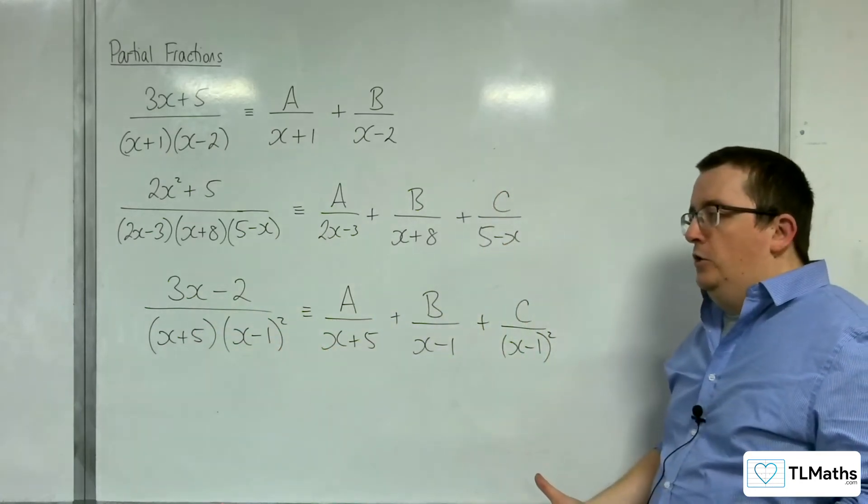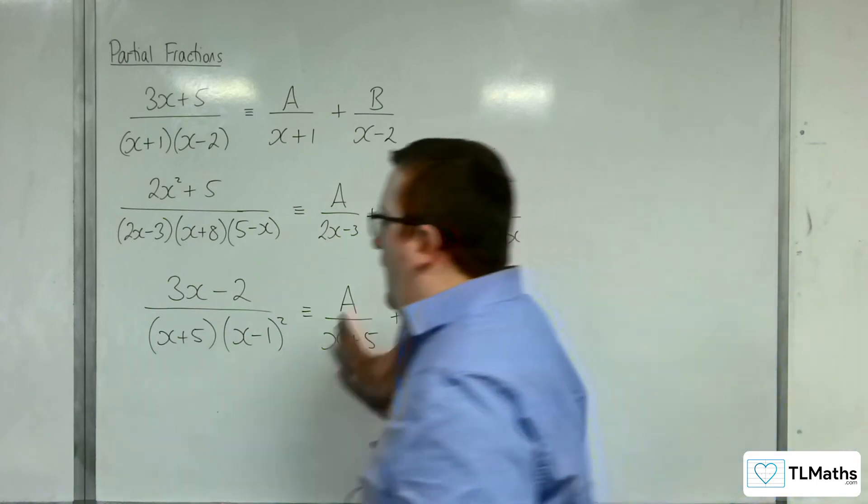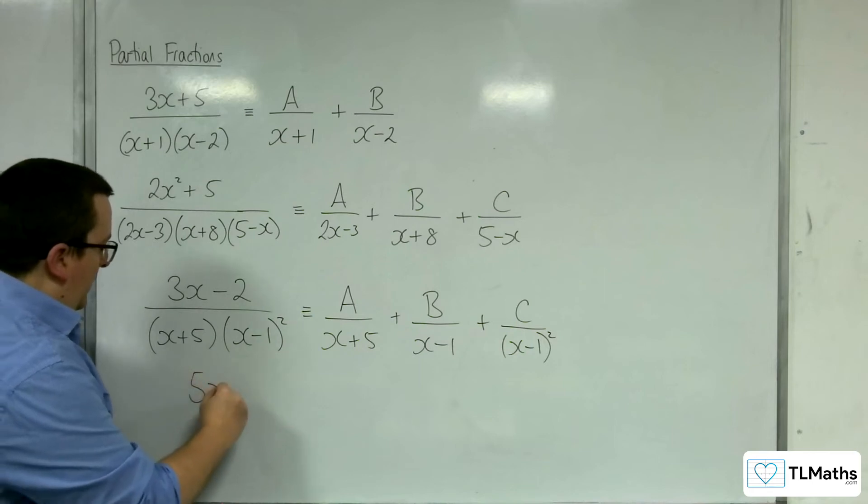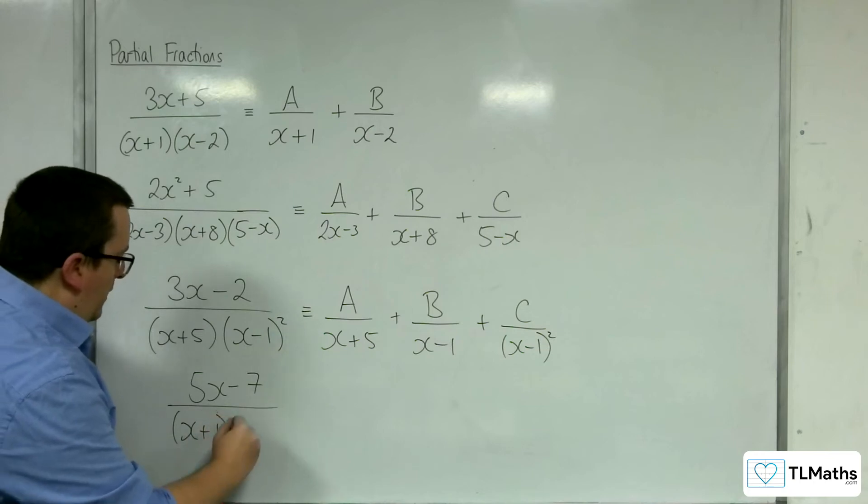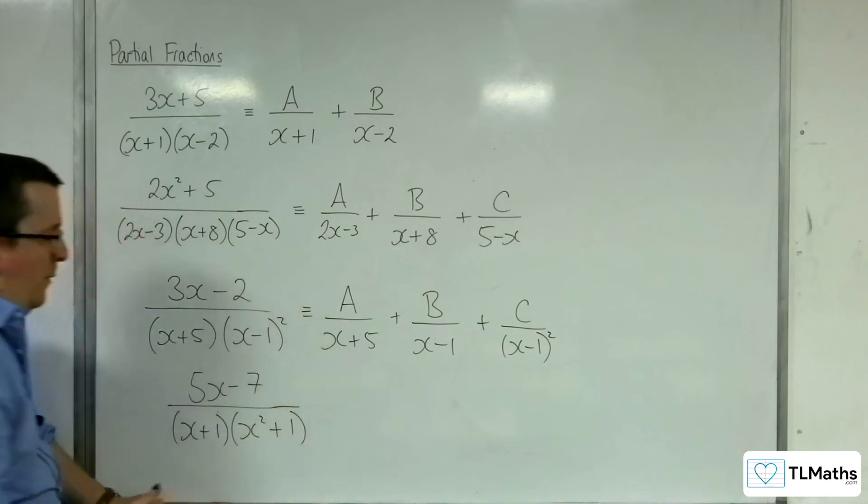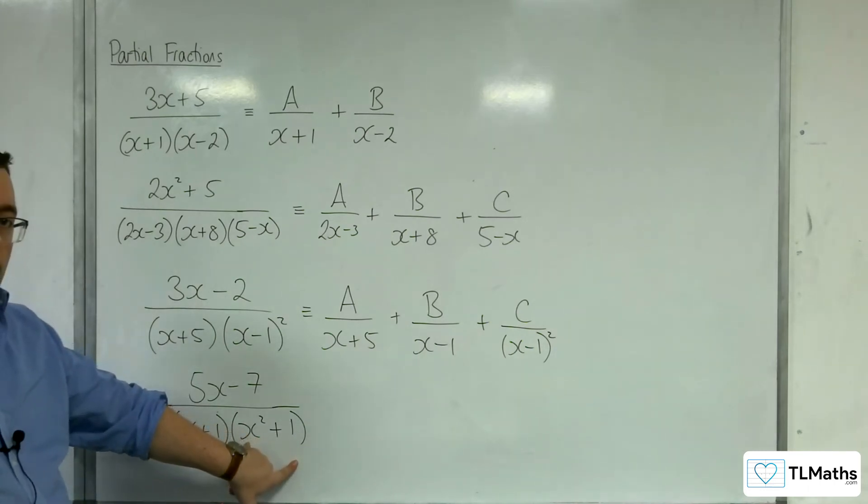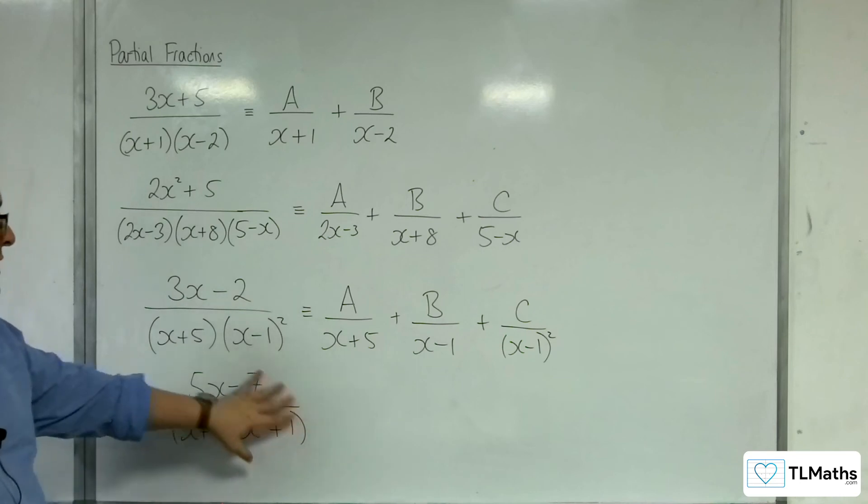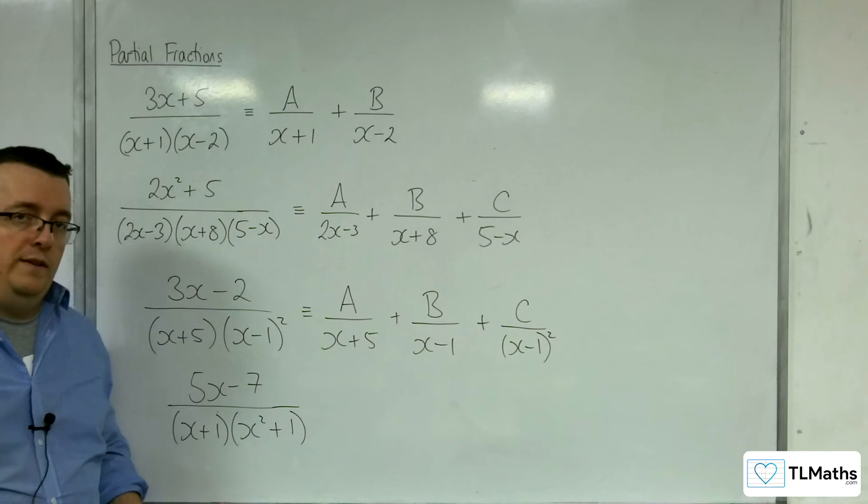In the next video, we are going to learn how we're going to deal with something that looks like this. So let's say we have 5x-7 over (x+1)(x²+1), where we're going to have a term in the denominator that is quadratic, that cannot factorize into two brackets, allowing you to then perform something like this. So for this type of problem, we're going to have to do something different in order to work with it.